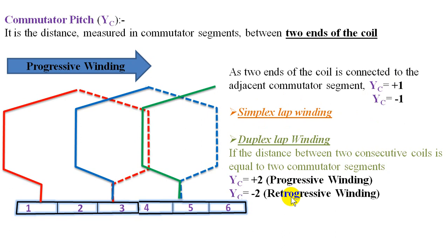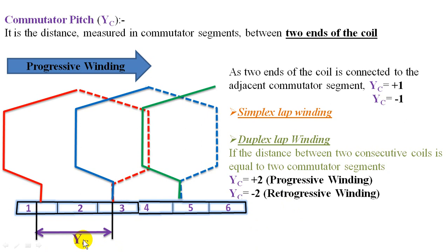A video will be shared where you can understand more clearly what is progressive and retrogressive, and details on YB, YF, YC, coil pitch, pole pitch, turns, and how currents are divided in lap and how lap winding is used for high current applications and wave for high voltage applications. For simplex wave winding, the formula for YC is given as (Z ± 2) / P — plus for progressive and minus for retrogressive winding. In the next video we will see the procedure for lap winding.